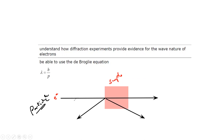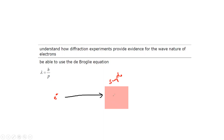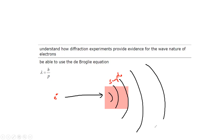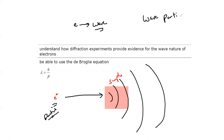In reality, when we pass an electron through a crystal sample, we observe that it produces a diffraction pattern — the electron behaves like a wave, not a particle. The electron is a particle, yet it behaves like a wave. This is called wave-particle duality.